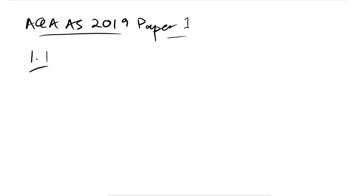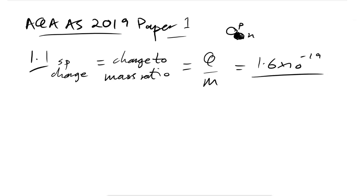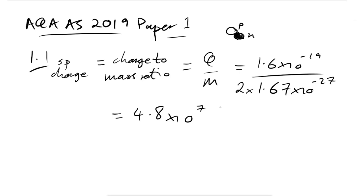Question 1.1. Deuterium contains one proton and one neutron. What's the specific charge? Specific charge is also known as charge to mass ratio — the charge of something divided by its mass. A deuterium nucleus has the charge of one proton: 1.6 × 10⁻¹⁹ coulombs, divided by two lots of the mass of a nucleon, 1.67 × 10⁻²⁷ kg. That gives you to 2 sig figs: 4.8 × 10⁷ coulombs per kilogram.